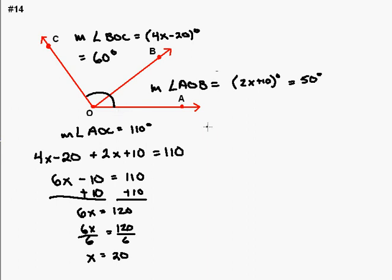And to double check myself, if I go 60 plus 50, does that equal 110? And in fact it does. So there's my check, and I now have the angle measure for both BOC and AOB.